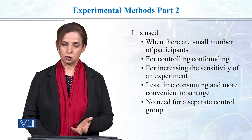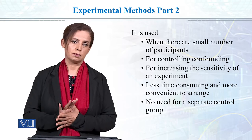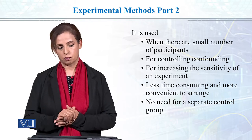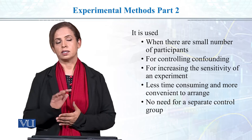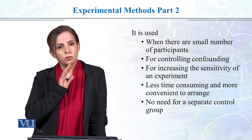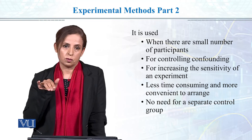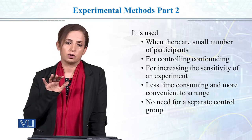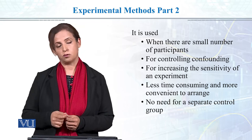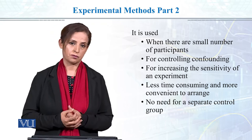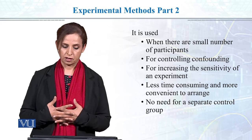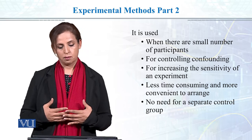We typically use a repeated measures design when we have a small sample size, when we want to really control confounding variables and individual differences, and when we want to increase the sensitivity of the experiment. With independent groups, individuals in different groups will inevitably differ, so we cannot always be sure whether the difference in the dependent variable is due to the independent variable or due to individual differences.